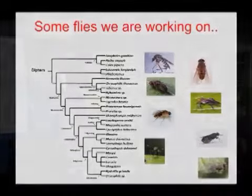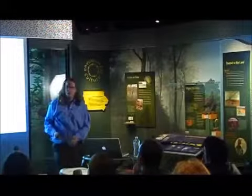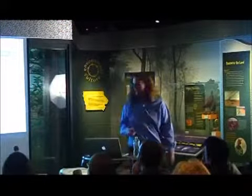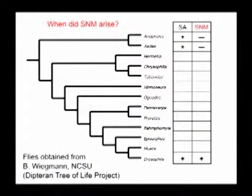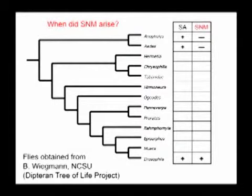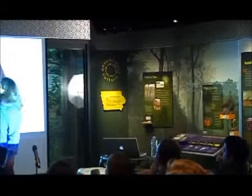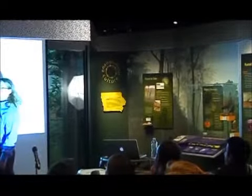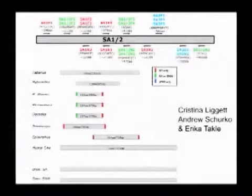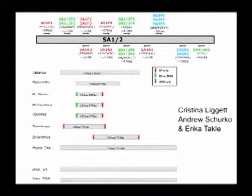Did it evolve somewhere in here? We didn't really know about meiosis and its distribution, so we did this degenerate PCR, and we pulled out lots and lots of sequences. What we found to our surprise is, here are all those insects, all those dipteran flies — flies of two wings — and the meiosis-specific version is only present in Drosophila. So it's a really recent invention.